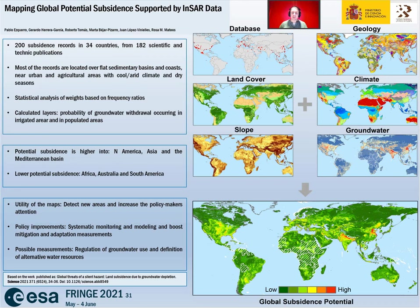On the other side, potential subsidence is concentrated all over Africa, Australia and South America, with a few exceptions in the Mediterranean coast and the specific basins of Argentina and Australia.